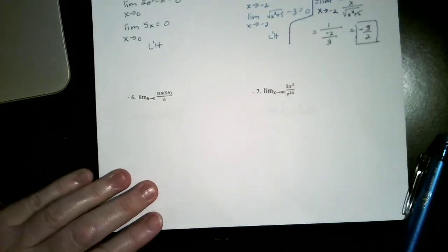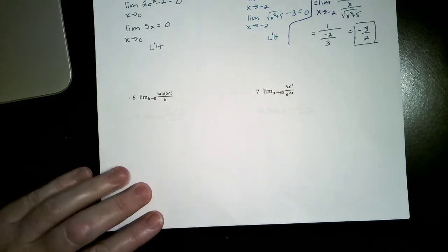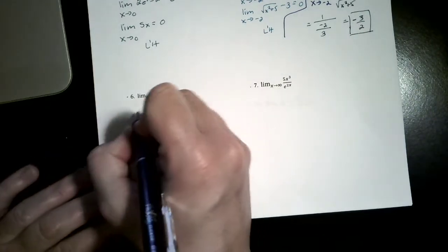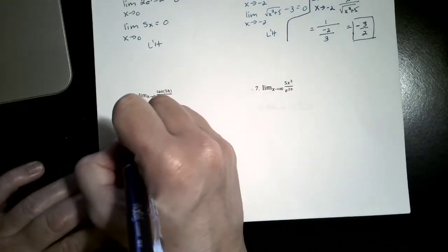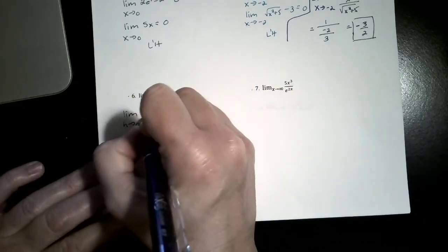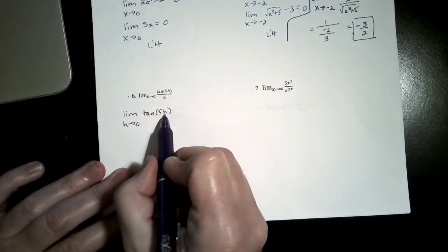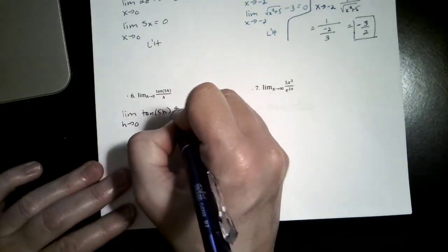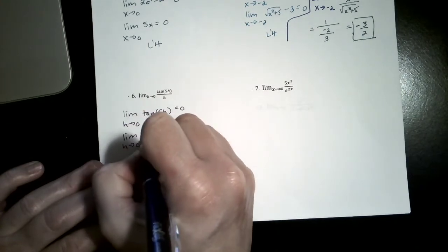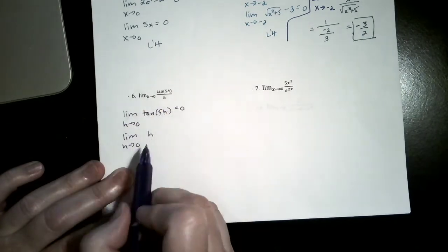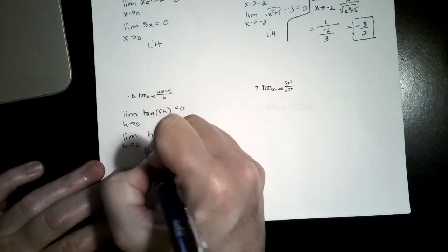Let's go on and do number 6. The limit of the numerator as h approaches 0, tangent of 5h: 5 times 0 is 0, and tangent of 0 is 0. The limit of the denominator — the limit of h as h approaches 0 — is just 0. So I'm going to use L'Hôpital.